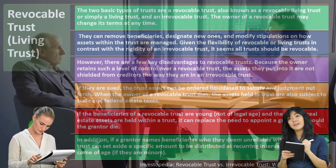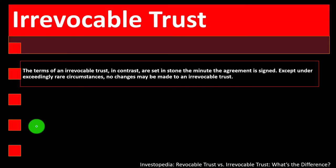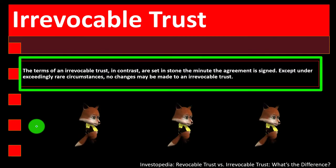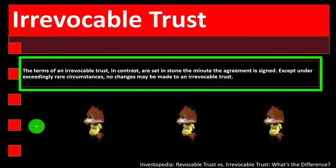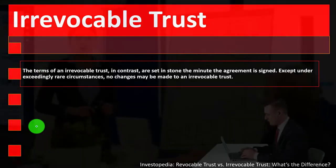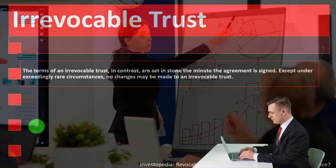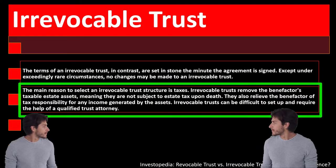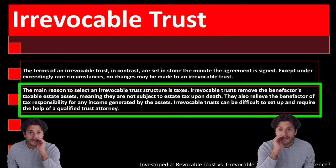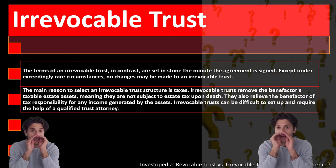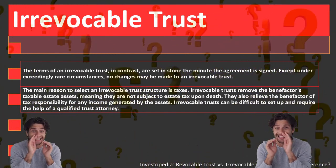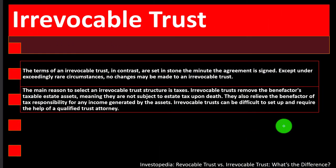An irrevocable trust's terms are set in stone the minute the agreement is signed — except under exceedingly rare circumstances, no changes may be made. The main reason to select an irrevocable trust structure is taxes. An estate tax is levied on the accumulation of assets at the point of death, which is typically a concern for people with fairly large estates. This could incentivize a taxpayer to try to give away money before death to reduce their taxable estate.